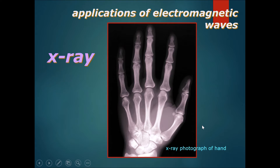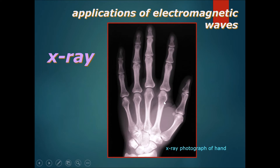The next type is X-rays — a lot of you have probably had an X-ray before, usually to check for the suspicion of broken bones. You can see here an X-ray photograph of a hand. X-rays are used to look at bones quite closely, because bones can block X-rays best, but flesh does not block them very well, so we get a clear view of the bones.